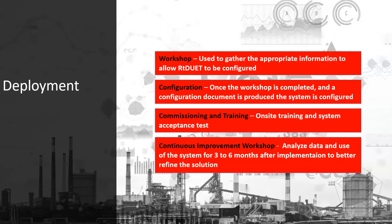RTDuet is best implemented through a solution approach — we won't simply drop off the application and let you figure it out. We take a four-step process: starting with an upfront workshop to understand your specific requirements, define the time usage model and KPIs, build out the reason code tree, and define any custom reporting requirements. Based on the resulting configuration document, we perform the system installation and configuration either remotely or on-site. Finally, we come to site and perform training with end users who will be classifying events and extracting data. Additionally, three to six months after implementation, we facilitate a workshop to analyze data, identify low-hanging fruit opportunities for asset improvement, and further refine the solution based on end user feedback.